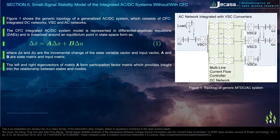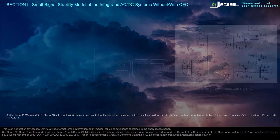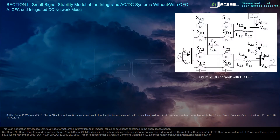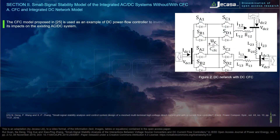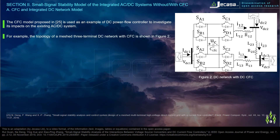The left and right eigenvectors of matrix A form the participation factor matrix, which provides insight into the relationship between states and modes. The CFC-integrated DC network model: the CFC model proposed in reference 25 is used as an example of a DC power flow controller to investigate its impacts on the existing AC/DC system. The topology of a mesh 3-terminal DC network with CFC is shown in Figure 2.